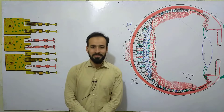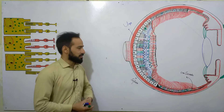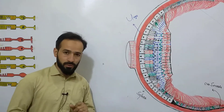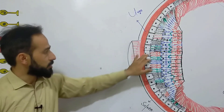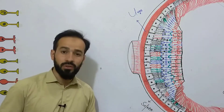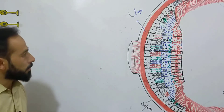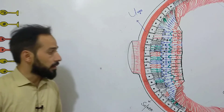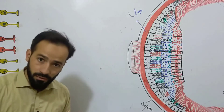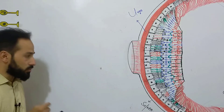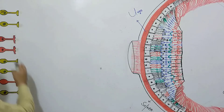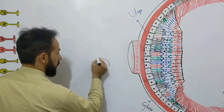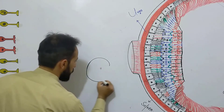Hello dear friends, welcome back. We are discussing the structure of the human eye. In the previous lecture I recorded about the types of rods and cones, the differences between rods and cones, and their structures. Now in this lecture I'm going to discuss the cells of the retina — how many types of cells are present in the retina. First, a little introduction of the eye, then we will go further.